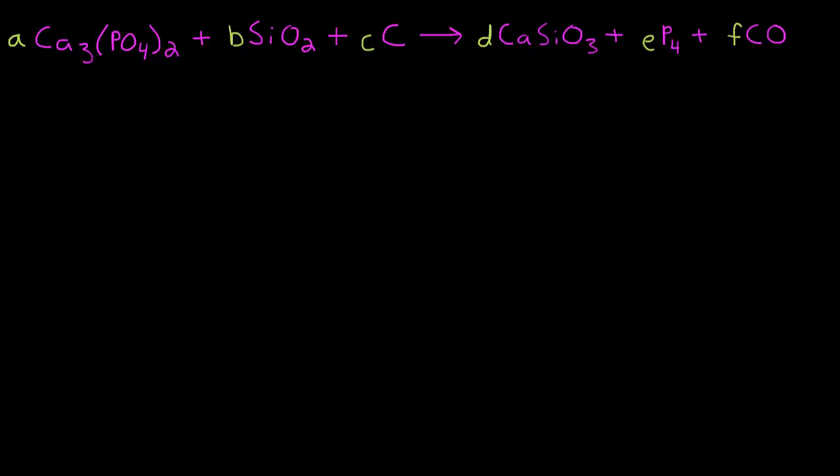We'll create our equations. It looks like our first one will be calcium. So calcium equation, we have three calciums in the A molecule. That's the only one on the left side, so our arrow becomes an equal sign. On the right we have a single calcium in the D molecule. So next is phosphorus. We have two phosphorus in the A molecule, and that's the only one on the left. Then on the right we have four phosphorus in the E molecule.